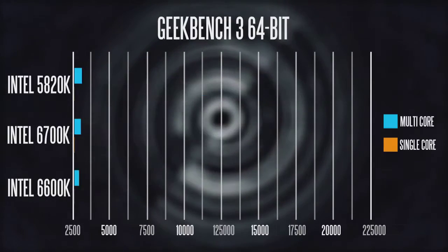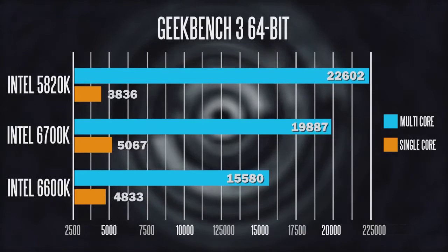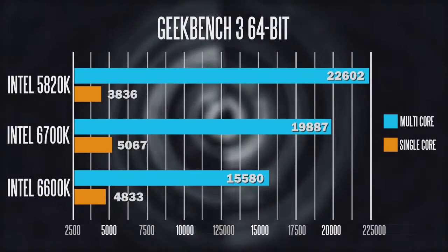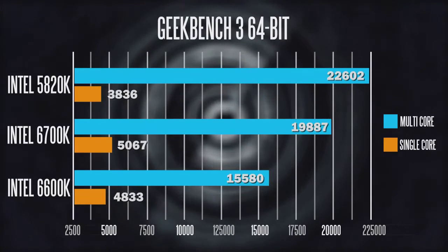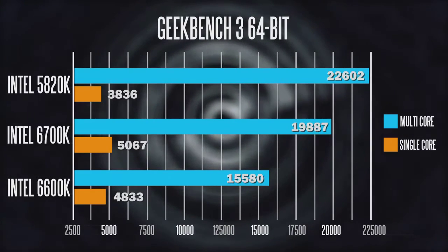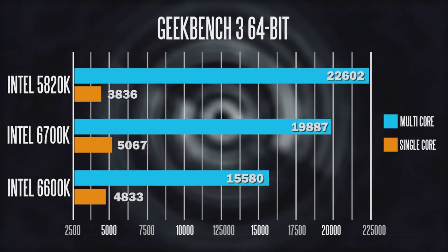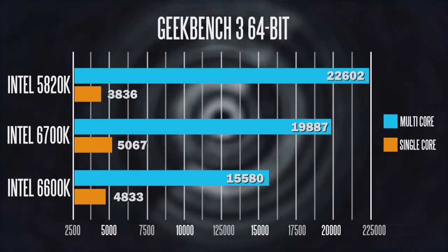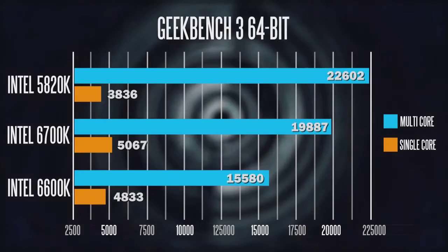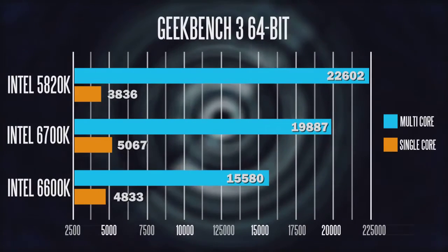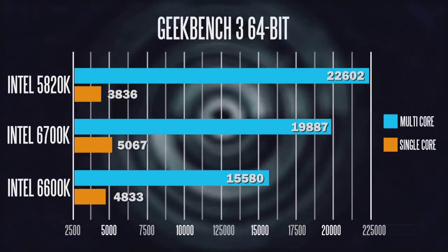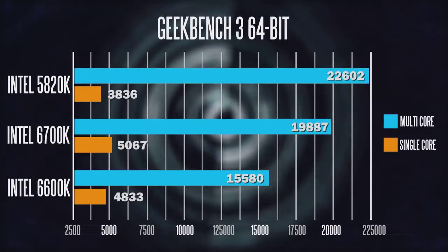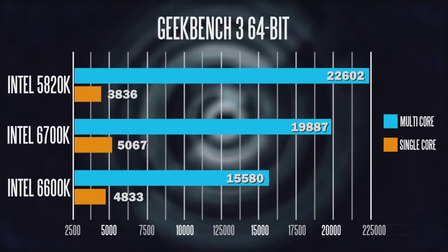The same trend holds for our Geekbench 3 results using the 64-bit benchmark. The multi-core score is highest on the 5820K, but surprisingly, the 6700K is actually the strongest when it comes to single-threaded performance, scoring an impressive 5,067 points. The 6600K is not too far behind at 4,833 points, while the 5820K's single-core performance is notably lower at around 3,800 points.